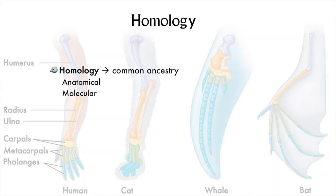The next line of evidence I want to tell you about is homology. Homology is similarity between organisms based on shared common ancestry. Organisms possess homologous structures or features based on the structure being present in the shared ancestor, though the structure may be modified. These structures may be anatomical, or they may just be found in the sequences of nucleotides or amino acids.